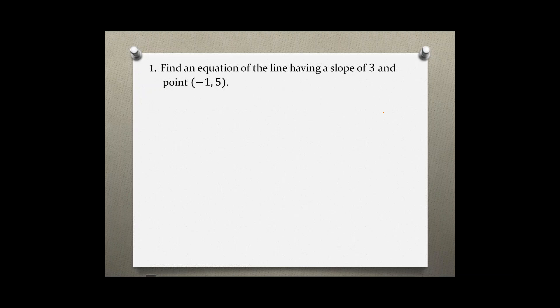Find an equation of the line having a slope of 3 and point (-1, 5). To solve this problem, we will need the point-slope formula, also called the point-slope form of an equation.